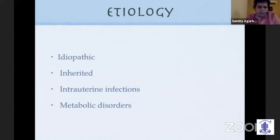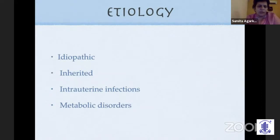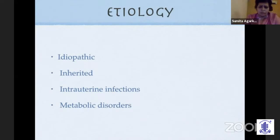Regarding etiology, it falls into four large groups. Idiopathic is still the largest — idiopathic does not mean there is no cause, but probably we don't know the cause at this point. With new next-generation sequencing and other genetic markers, a lot more cataracts are going to move into the inherited category. In our country, intrauterine infections form a very large part of cataracts, and a small percentage are metabolic disorders.